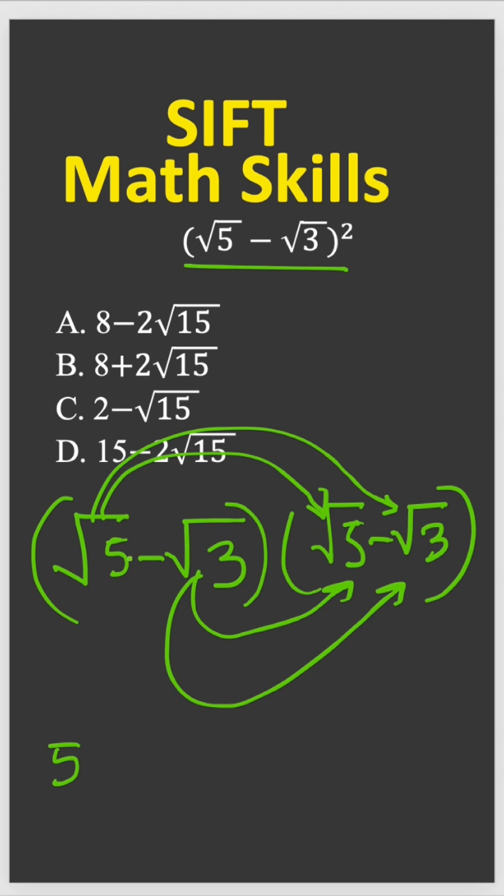Now you have to multiply square root over 5 with square root over 3. So that gives you square root over negative 15. Now follow the arrow here. So square root over 3 times square root over 5 again gives you square root over 15.